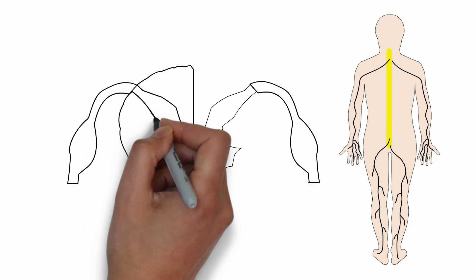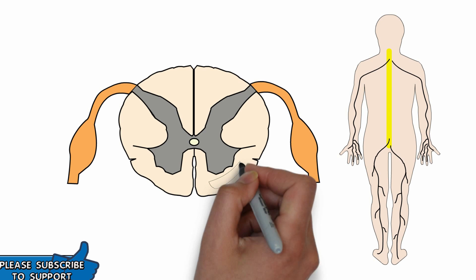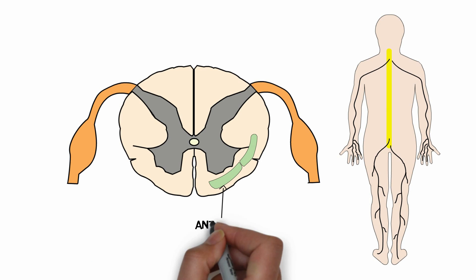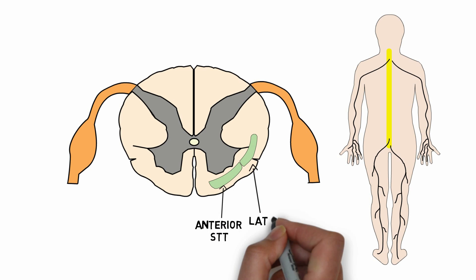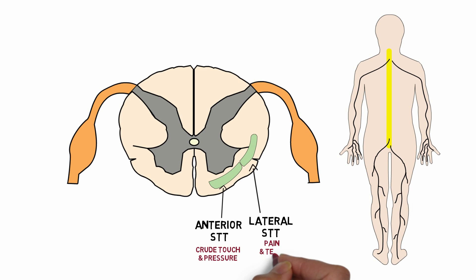This is the cross section of the spinal cord showing the position of the spinothalamic pathway. It is made up of two distinct nerve fiber tracts: the anterior spinothalamic tract and the lateral spinothalamic tract. The anterior spinothalamic tract carries the sensation of crude touch and pressure, whereas the lateral spinothalamic tract carries the sensation of pain and temperature.